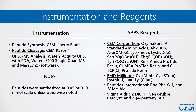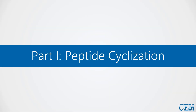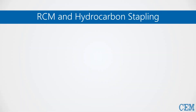While the Liberty Blue can synthesize peptides from the 5 micromole to the 5 millimole scale, all peptides presented in this webinar were synthesized at the 0.05 or 0.10 millimole scale, unless otherwise stated. Now let's begin by looking at the methods of peptide cyclization possible on the Liberty Blue, starting with RCM and hydrocarbon stapling.